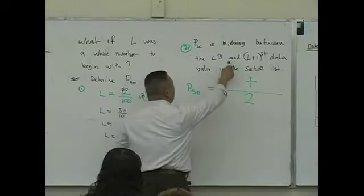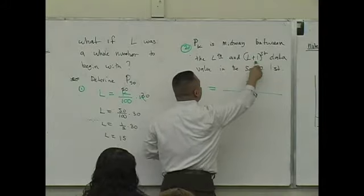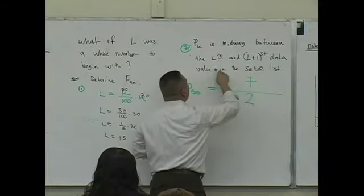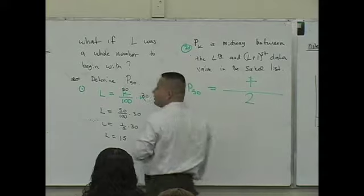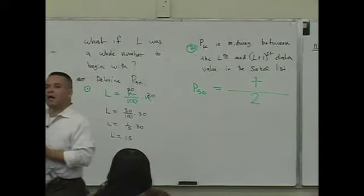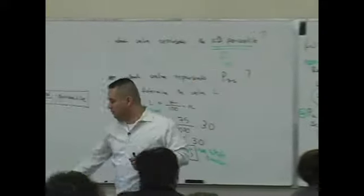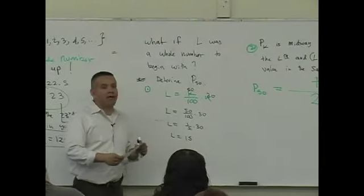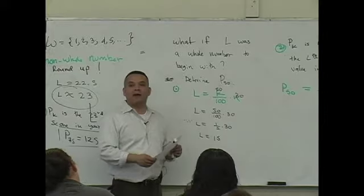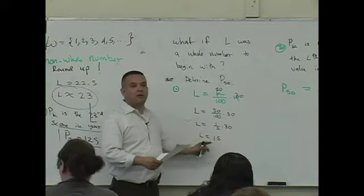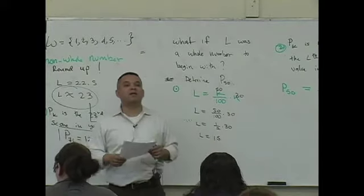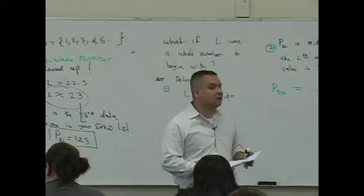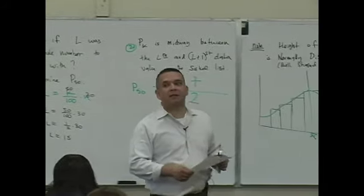The Lth and L plus first data value in the sorted list. I'm going to have to go look for what? Data values. What is the Lth and L plus first data value? What's the value of L? It's 15. I have to look at the values. What's the 15th and the 16th?